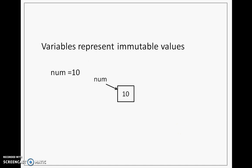Now, these values that we create are immutable. That means I cannot change them. Though I say that num is a variable — something being a variable means I can change its value — but when values are created, they are immutable, meaning I cannot change them. So how does that happen and how are variables created? Let's study that.